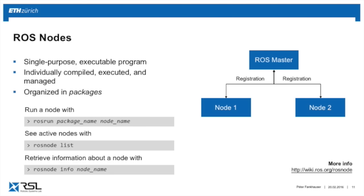To run a node you type rosrun, then the package name, then the name of your executable. Once you've done that, you can see a list of all running programs by typing rosnode list. If you need further specific information about one ROS node, type rosnode info and then the name of the node, and it spits out all the information about that node.